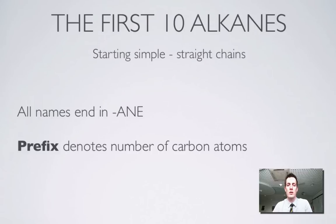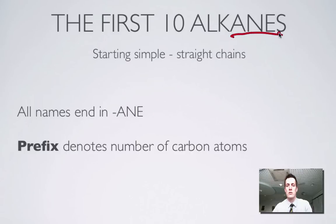We'll start off by looking at what we call straight chain alkanes. One important thing to point out about the alkanes is that all their names end in '-ane'. They're called the alkanes because their names end in '-ane', and their names are basically a combination of that ending and a prefix which tells you how many carbon atoms there are in the molecule.